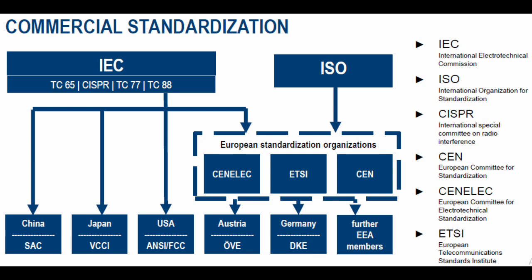Within IEC it covers TC65, CISPR, TC77, and TC88. China has their own standardization like SSC; Japan has VCCI; USA has ANSI and FCC. By collaboration with IEC and ISO, they have standardizations like CEN, CENELEC, SENLAC, ETSI — the European standardization organizations. Australia has OVE, Germany has DKE and further EEA members. These are the country-specific standardizations.